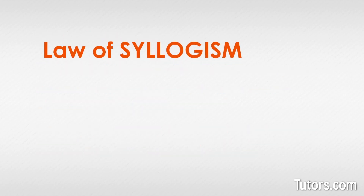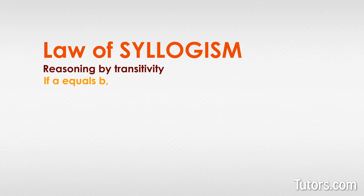The law of syllogism is also known as reasoning by transitivity. It is similar to the transitive property of equality, which says: if a equals b and b equals c, then a equals c. The power of logic is seen over and over in geometric proofs — when you substitute terms, for example, you are following the law of syllogism.